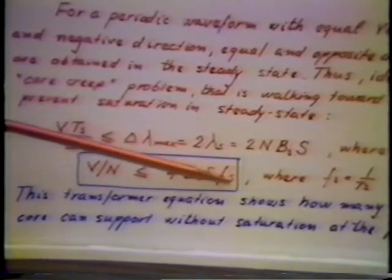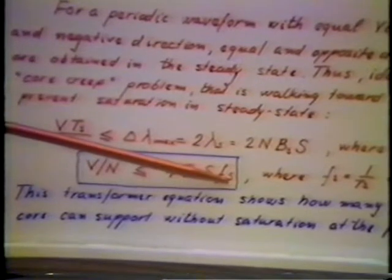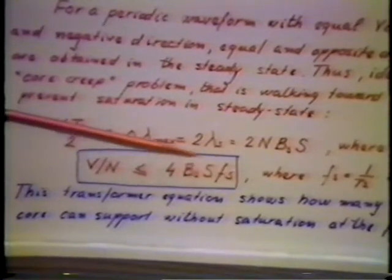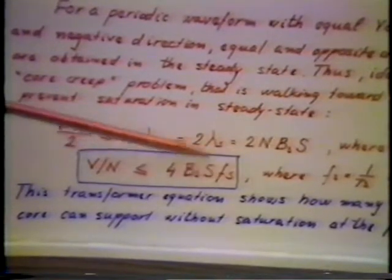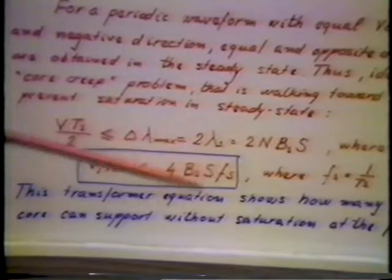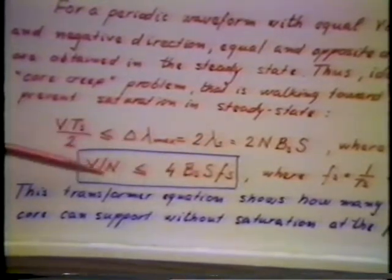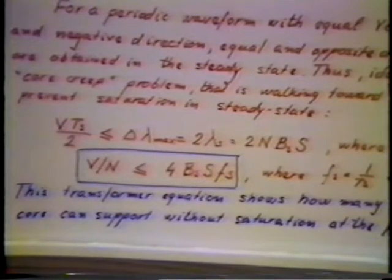For example, by increasing the switching frequency by a factor of 10, say from 10 kHz to 100 kHz, this immediately allows us to decrease the core cross-sectional area by a factor of 10 and still maintain the same flux level below the saturation of the core.